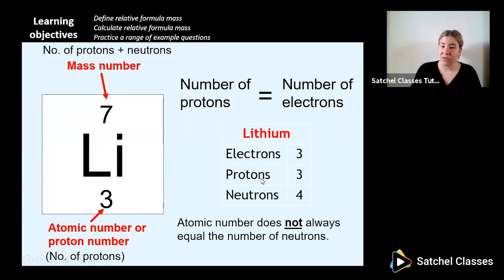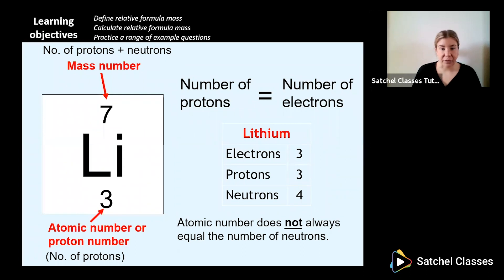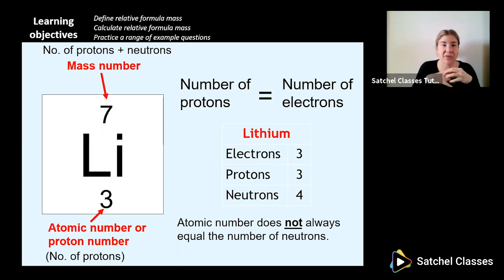The number of protons lithium has is three because that's the atomic number. It also has three electrons, because the number of protons equals the number of electrons in an atom. To work out the number of neutrons, you do mass number minus atomic number. Just a heads-up: the atomic number doesn't always equal the number of neutrons — lithium is a good example because it has a different number of protons and neutrons.